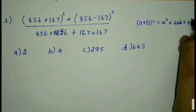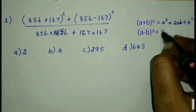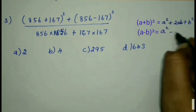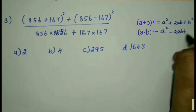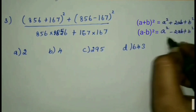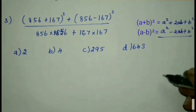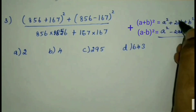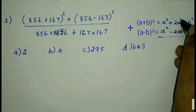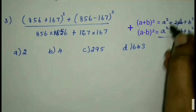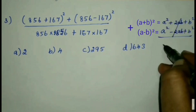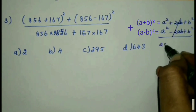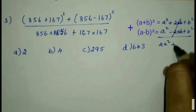The identity (a + b)² = a² + 2ab + b², and (a - b)² = a² - 2ab + b². When we add both, the plus 2ab and minus 2ab terms cancel each other out, leaving a² + a² = 2a² plus 2b².